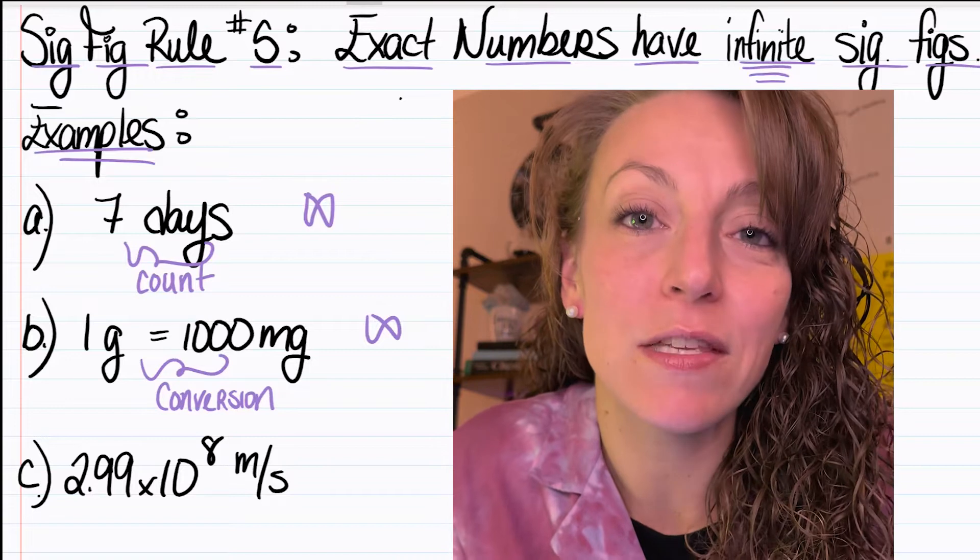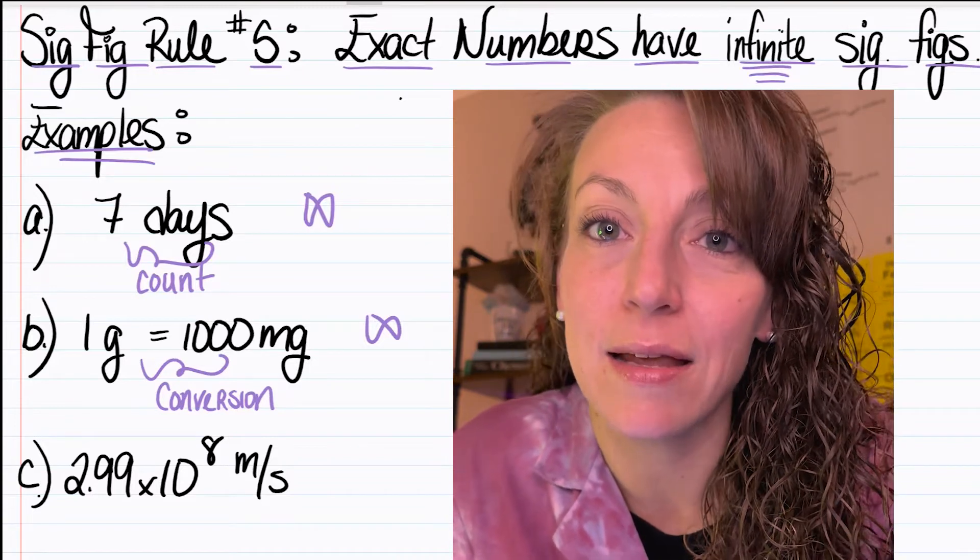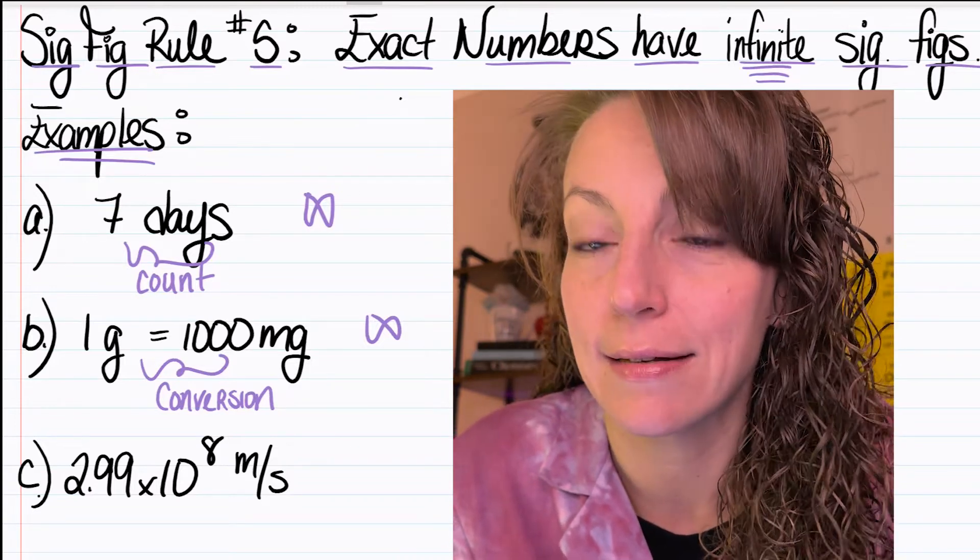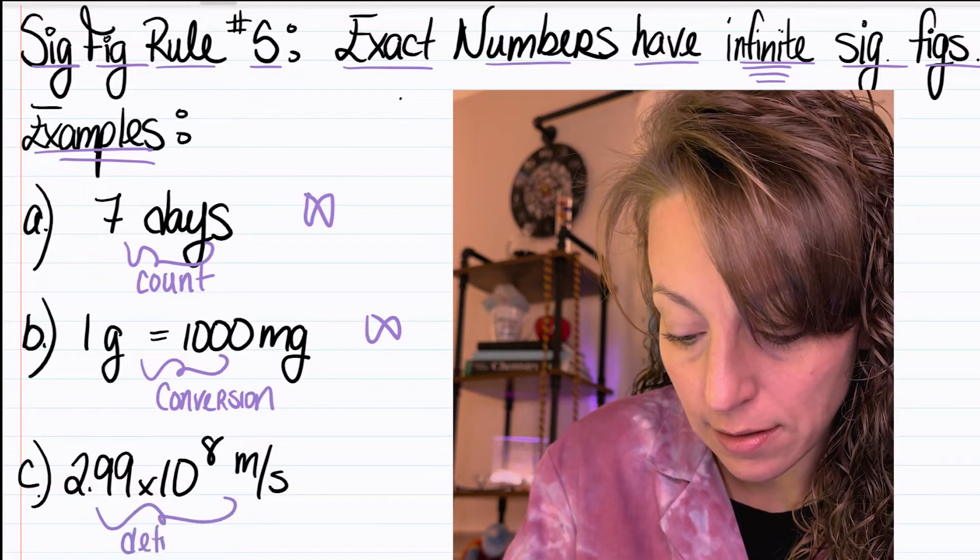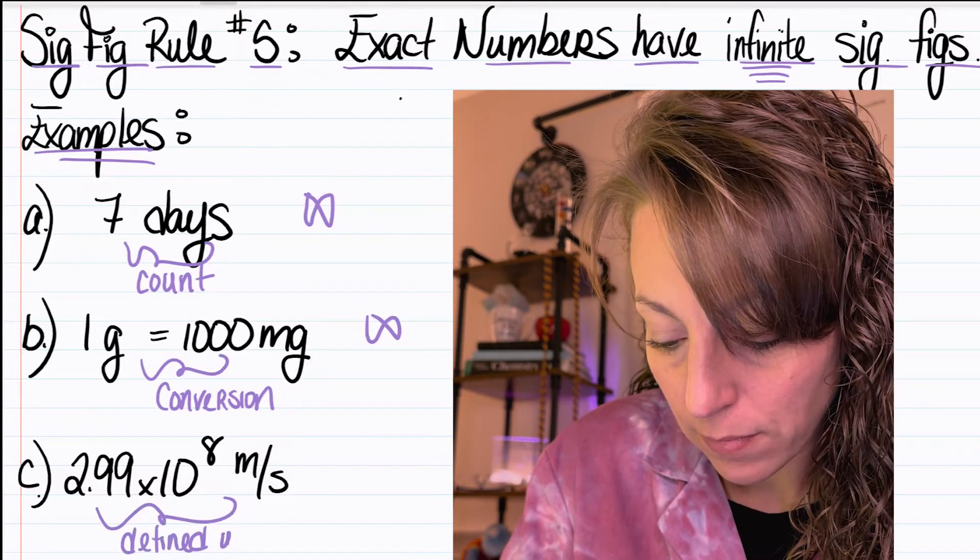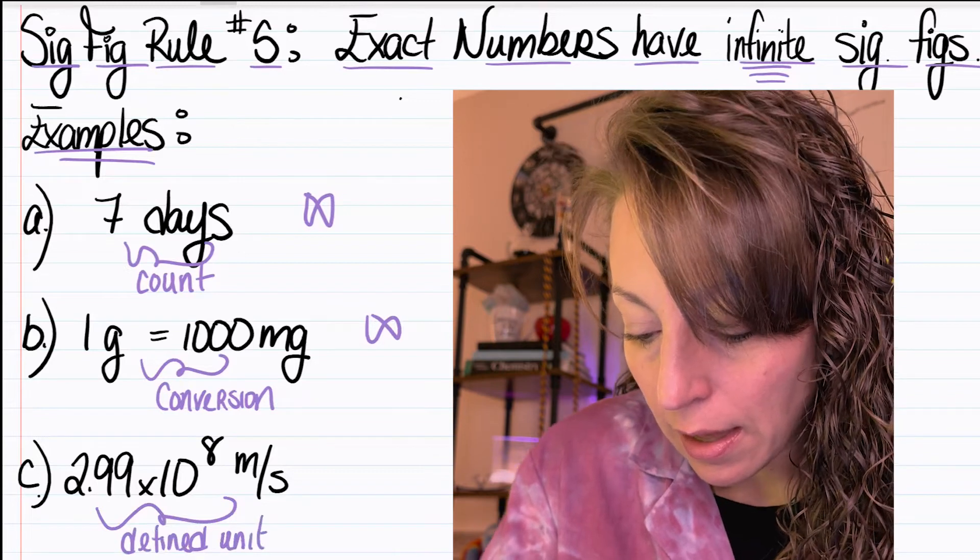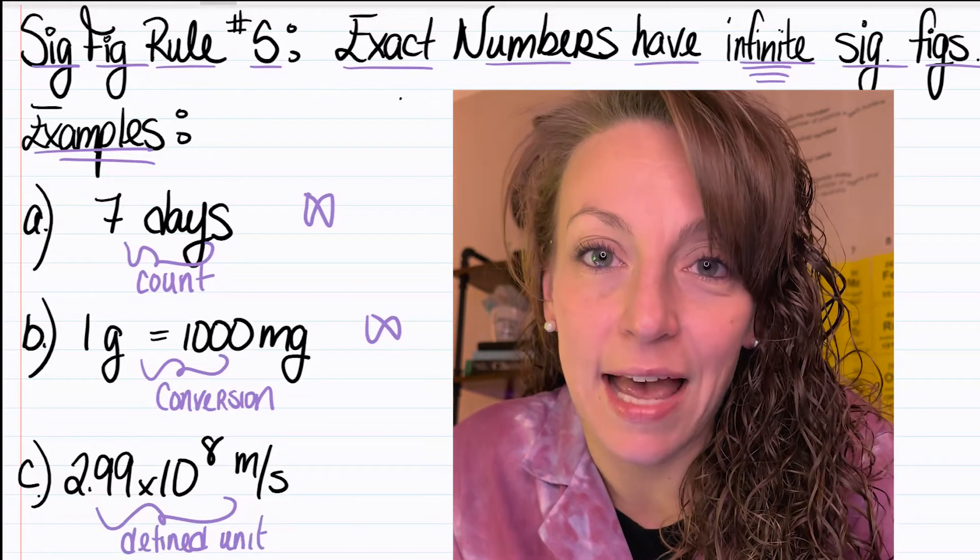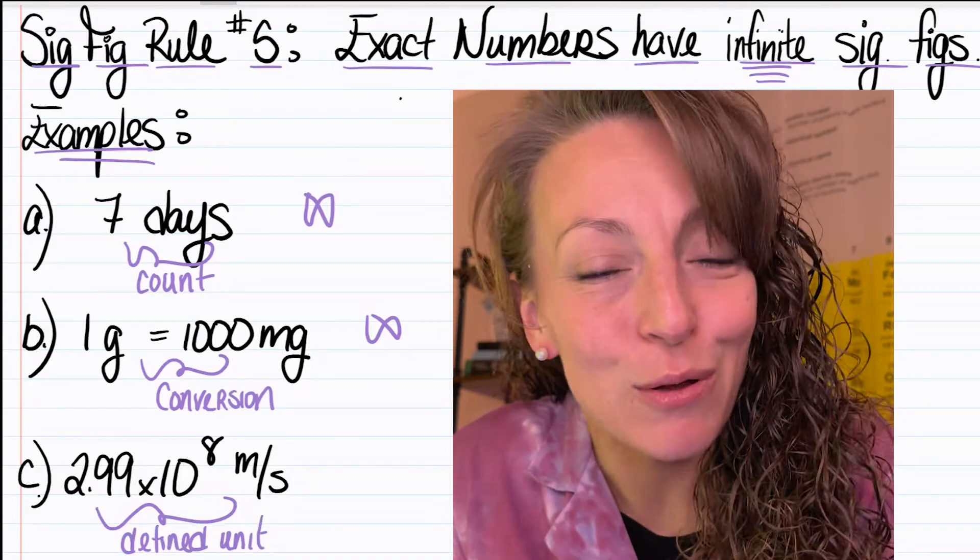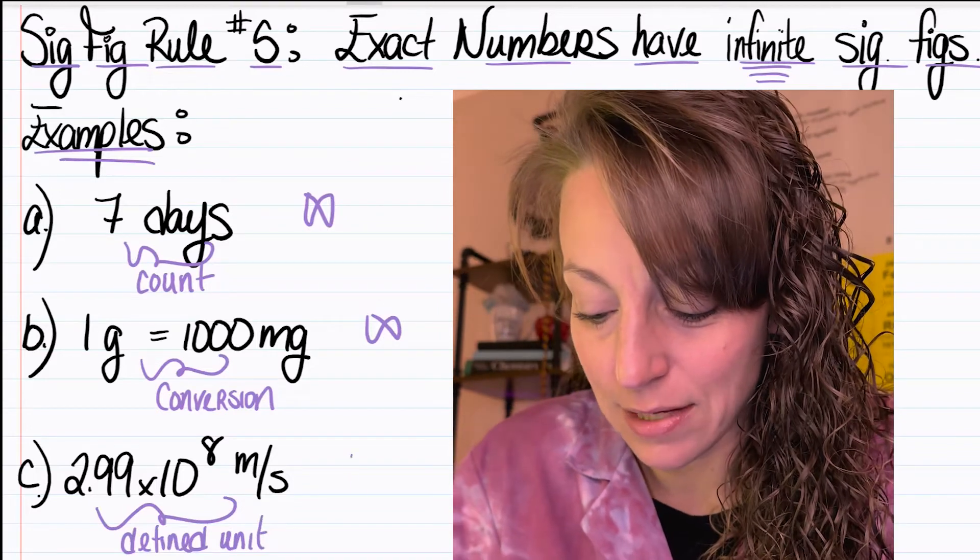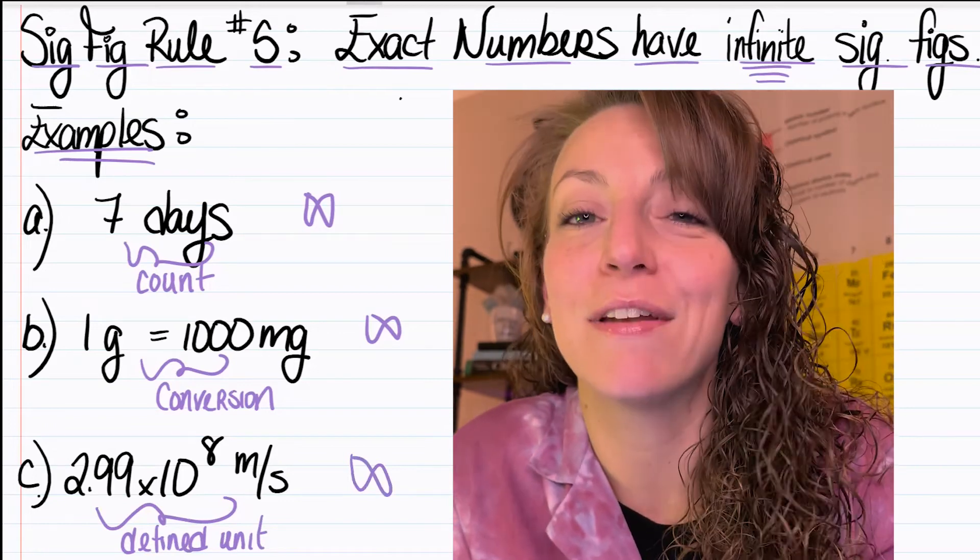Finally, in letter C, we have the speed of light, 2.99 times 10 to the eighth meters per second. This is a defined unit, and it's another example of an exact number. So when the speed of light appears in your calculations, it will also not limit the number of sig figs, because it's considered to have an infinite number.